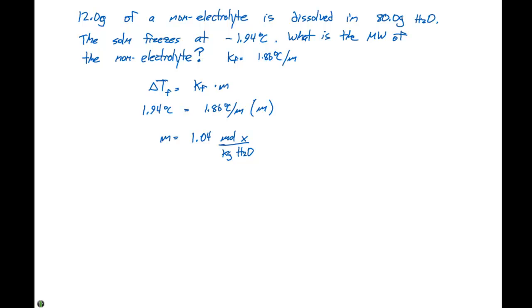We have 80 grams of water, so we can figure out how many moles of this non-electrolyte we have. We have 80 grams of our water solution. We need to convert that to kilograms by moving the decimal point three places, and we get 0.0800 kilograms of water. Our kilograms of water cancel out, and that gives us 8.32 times 10 to the minus 2 moles of our non-electrolyte, or moles of x.